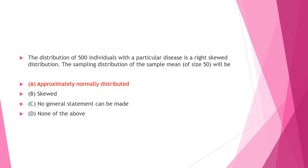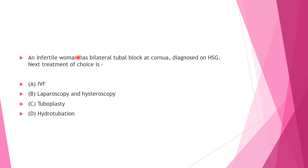Next question: An infertile woman has a bilateral tubal block at the cornua diagnosed on HSG. The next treatment of choice is — Option A: IVF (in vitro fertilization), Option B: laparoscopy and hysteroscopy, Option C: tuboplasty, Option D: hydrotubation. Answer to this question is Option B: laparoscopy and hysteroscopy.